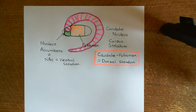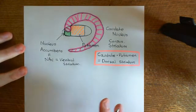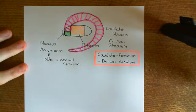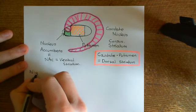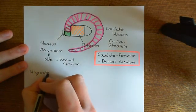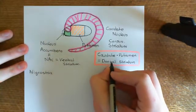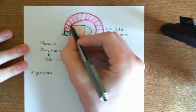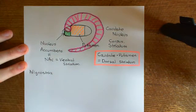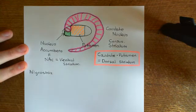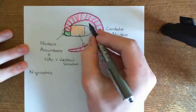Before we go on to the function of the basal ganglia and see how this is going to be involved in the voluntary initiation of movement, we need to discuss one more anatomical structure: the dopaminergic projection from the substantia nigra pars compacta to the dorsal striatum. These dopaminergic neurons are going to be coming to the caudate nucleus and the putamen.